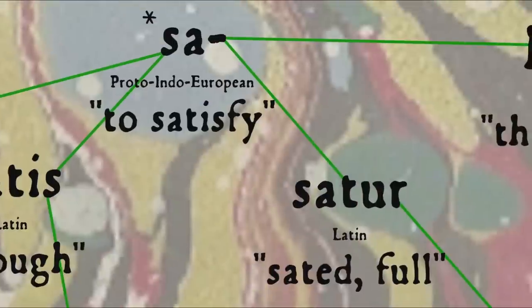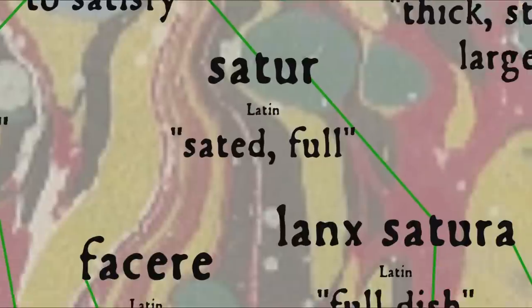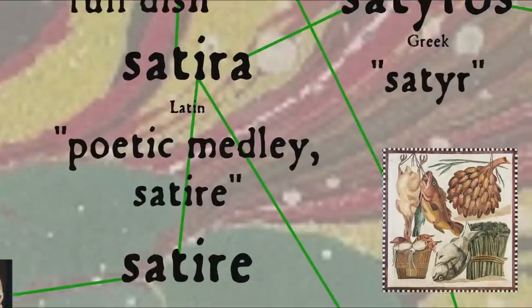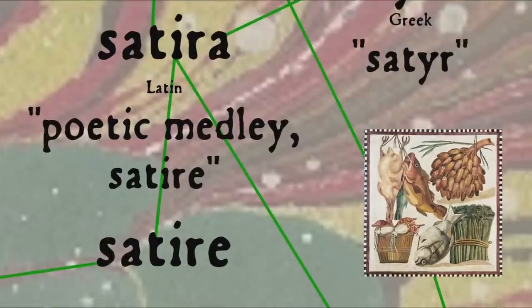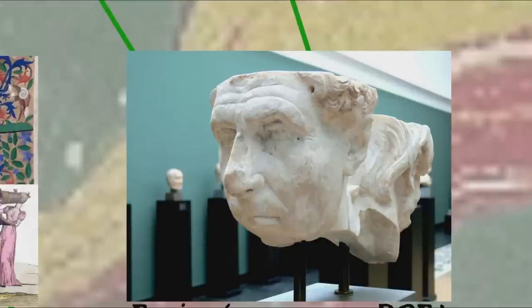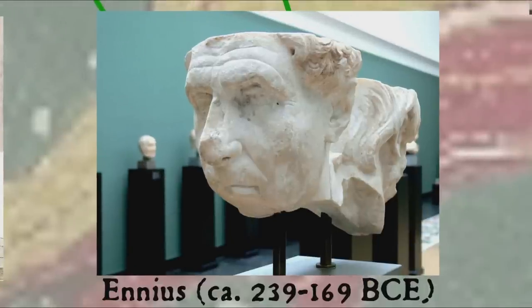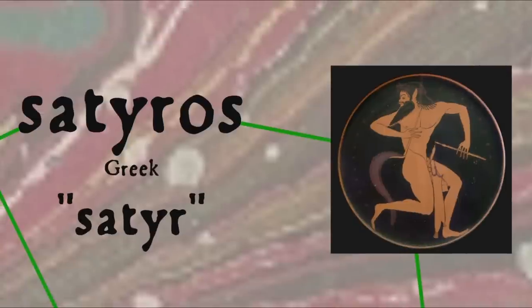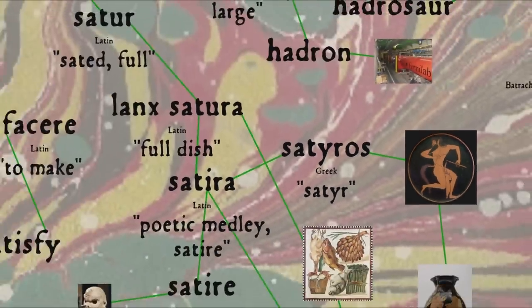But for our purposes it's the related Latin word satur, sated or full, that's important, because it was used in the phrase lanx satura, literally full dish, and was thus used to mean mixed dish, dish filled with various kinds of fruit, which then in a metaphorical sense became the word satira meaning a poetic medley, particularly collections of poems in various meters by the Roman poet Ennius, and further gained the sense of work intended to ridicule vice or folly, perhaps influenced by the satyr plays of the Greek dramatic tradition, satyr referring to the goatman creatures of Greek myth whose etymology is unknown, and it's from Latin satira that we get the word satire.